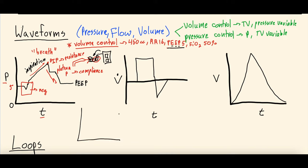That's the introduction to the waveforms in volume control with some comparisons to pressure control changes — what the different parts of the waveform mean. Now let's talk about loops. We have two main loops: the first is the pressure-volume loop, with pressure on the x-axis and volume on the y-axis.